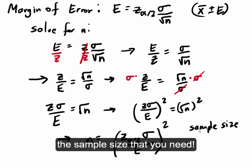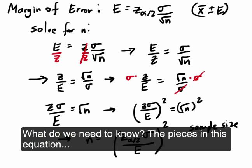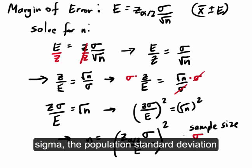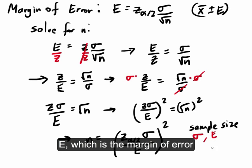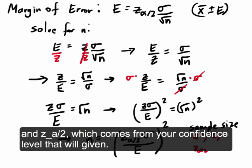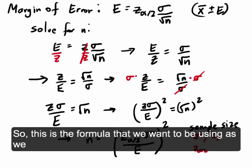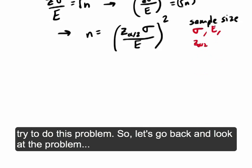The things you need to know to use this formula are the pieces inside the equation: sigma, which is the population standard deviation; E, which is the margin of error; and Z alpha over 2, which comes from your confidence level. So this is the formula we want to use as we solve this problem.